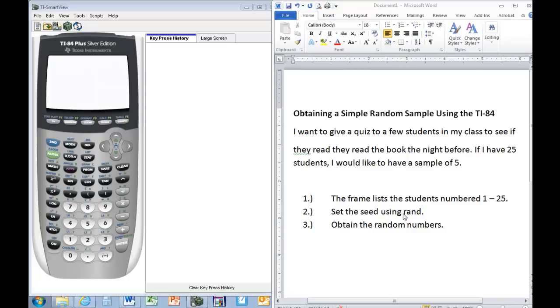The second thing we want to do is to set the seed on the calculator. This is the initial point for the generator to start creating the random numbers. If everybody sets their seed at the same number, we will all obtain the same numbers in our sample.